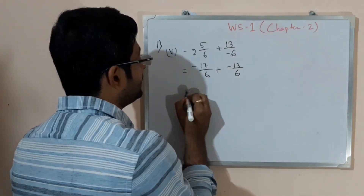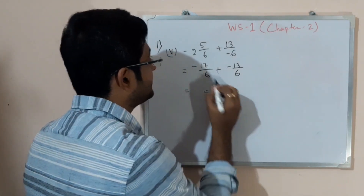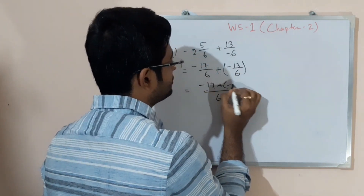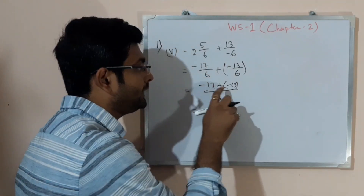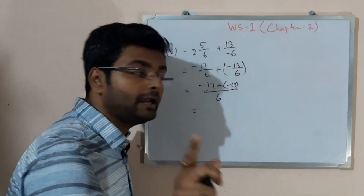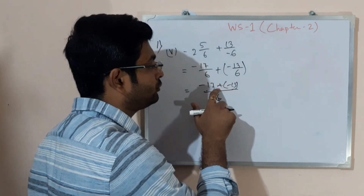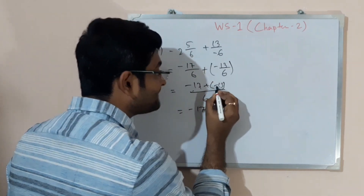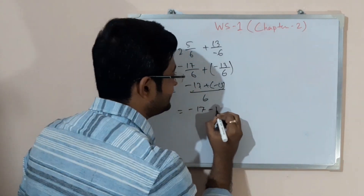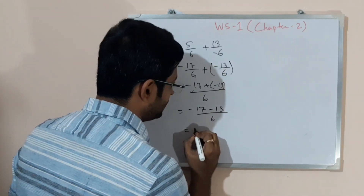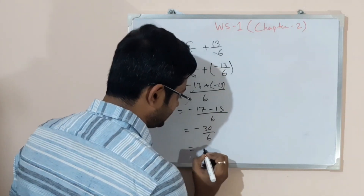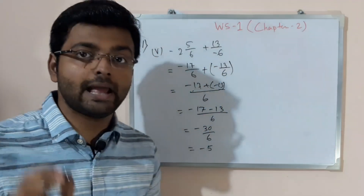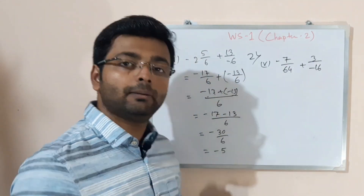Now you can see the denominators are the same — both are 6. Add them: 17 plus (minus 13). This part is important: there is a plus sign and a minus sign in the bracket, so both signs cannot be written together, so I put a bracket. Minus 17 plus minus gives minus 13 by 6, which equals minus 30 by 6. That simplifies to minus 5. So minus 5 is the answer.